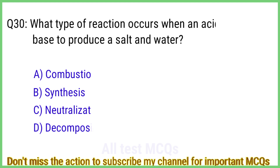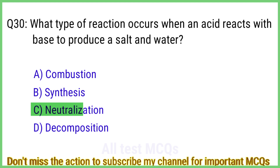Question number 30. What type of reaction occurs when an acid reacts with a base to produce a salt and water? The right answer is option C: Neutralization.